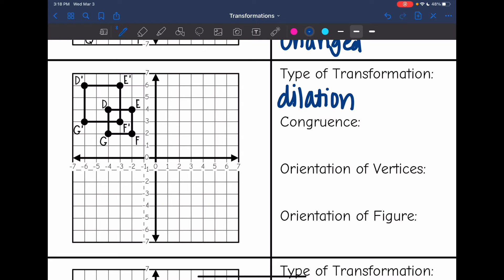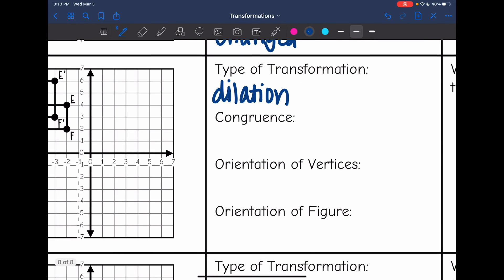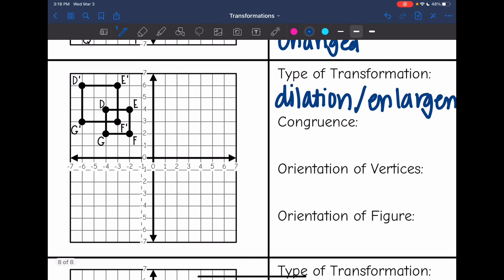And we got bigger. We went from this smaller one to this bigger one. So it's an enlargement. And let's figure out what the scale factor is by looking at some points. So I'm going to use D and D prime for my corresponding points. D was at negative 4, 4.